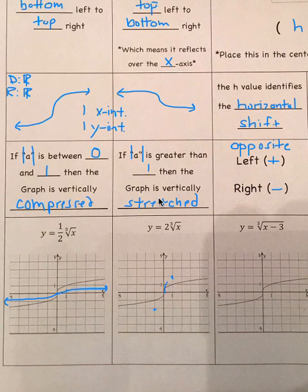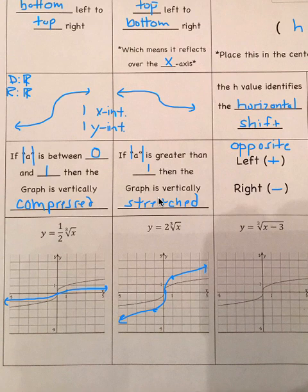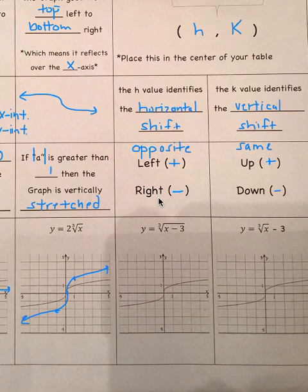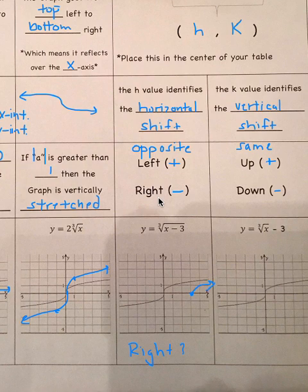These graphs start out growing quickly between negative one and one, but then level out afterward. For the cube root of x minus 3, this means shifting right three — so everything that happened on the parent function shifts three units to the right.